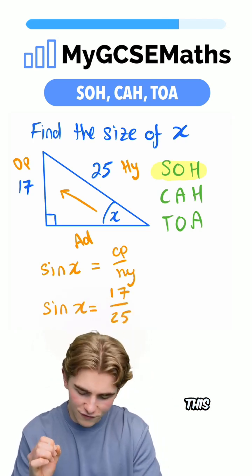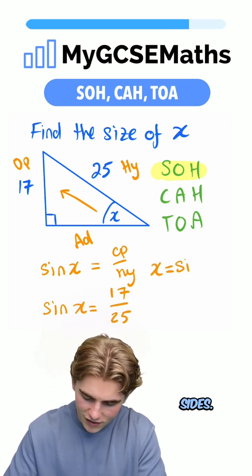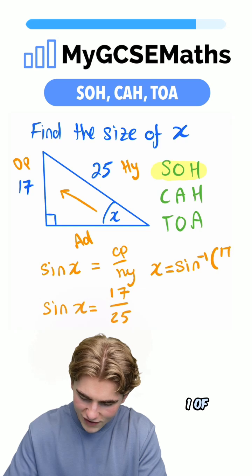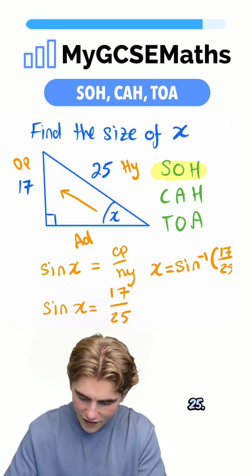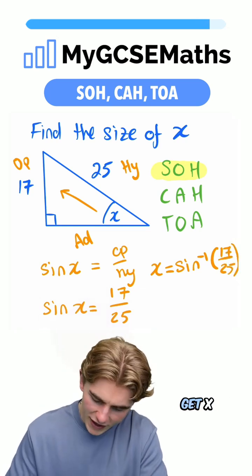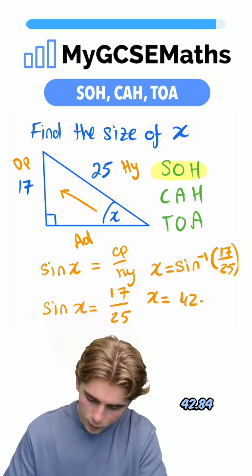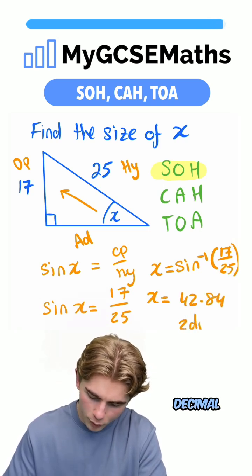Then to find this value of X, we're going to do sine to the minus 1 of both sides. So X equals sine to the minus 1 of 17 over 25. Bring that into our calculator, then we would get X equals 42.84 to two decimal places.